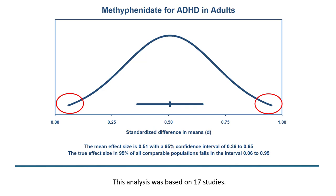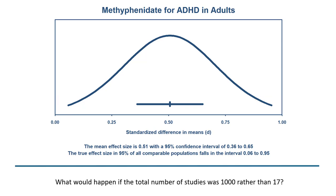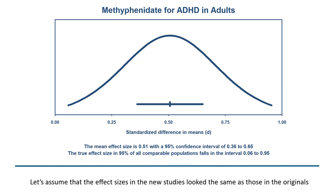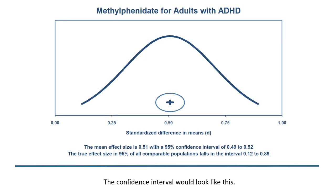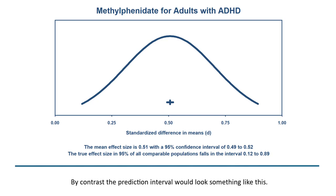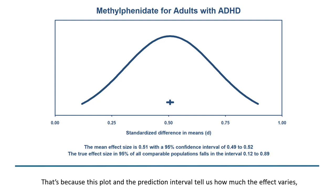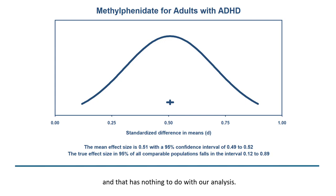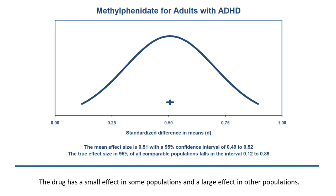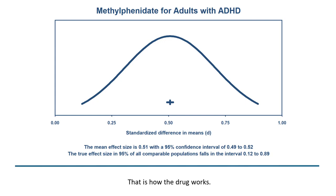The prediction interval says the true effect size in 95% of all comparable populations falls in the interval 0.06 to 0.96 — it is an index of dispersion, telling us how widely the effects vary. If the total number of studies were 1,000 rather than 17, the confidence interval would narrow considerably, since it tells us how precisely we've estimated the mean. By contrast, the prediction interval would look essentially the same, because the drug's variation across populations is a real-world property unaffected by increasing the number of studies.